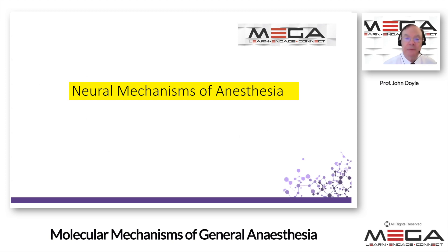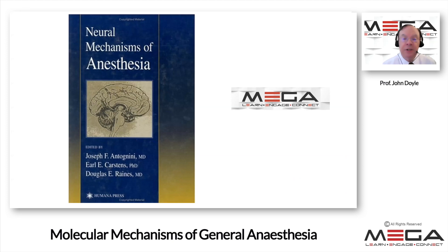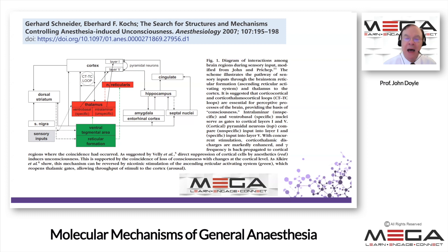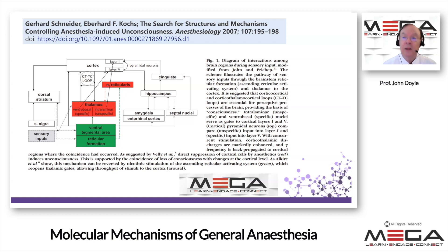Let's begin by looking at some of the neural mechanisms of anesthesia. For people interested in more details, there is a book on neural mechanisms of anesthesia published by Humana Press. I would also bring to your attention an article from Anesthesiology 2007: 'The search for structures and mechanisms controlling anesthesia-induced unconsciousness.' Although around 14 years old, it gives you a good idea of the complexity of the problem, and the fact that drugs may operate at various levels through different mechanisms.